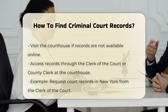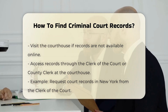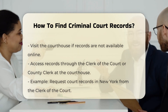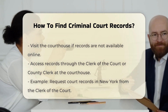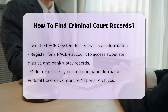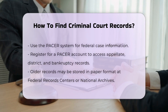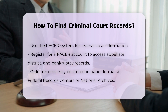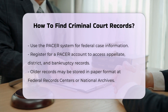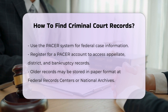Using PACER for federal cases. For federal cases, you can use the Public Access to Court Electronic Records (PACER) system. PACER allows you to search and locate appellate, district, and bankruptcy court case and docket information. You need to register for a PACER account to access these records.